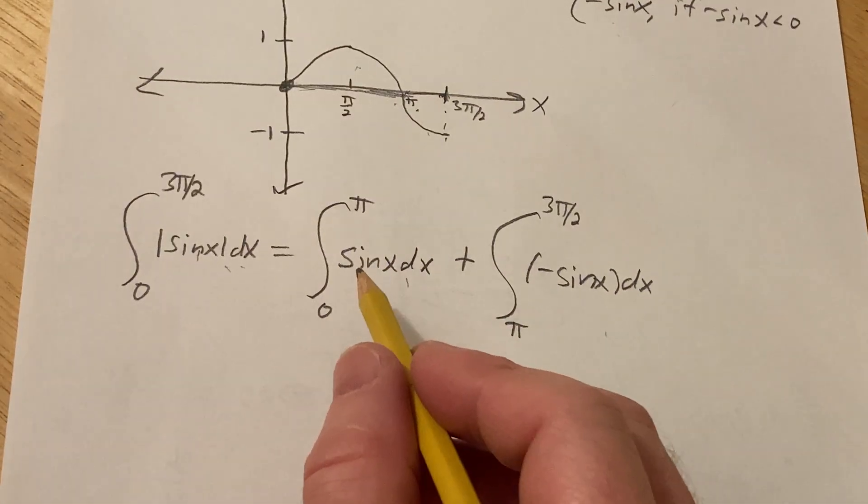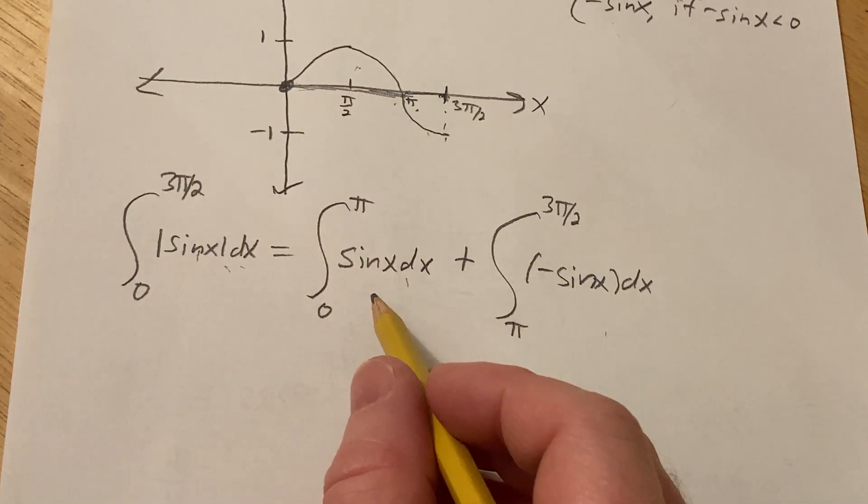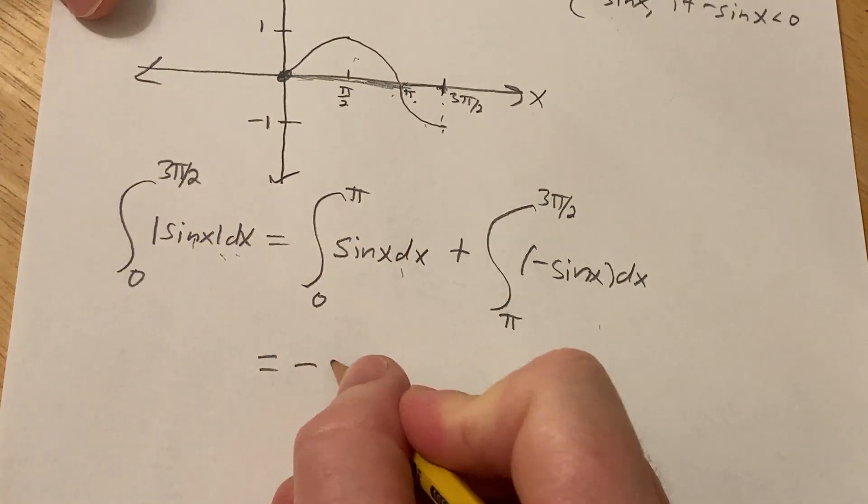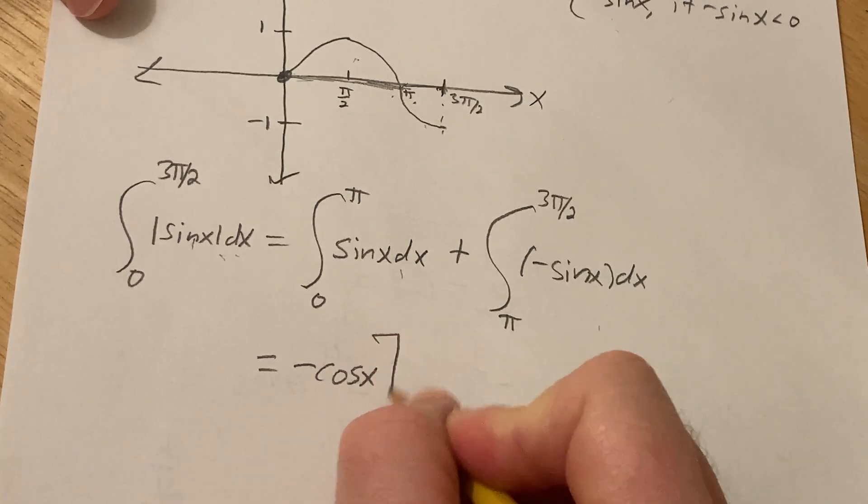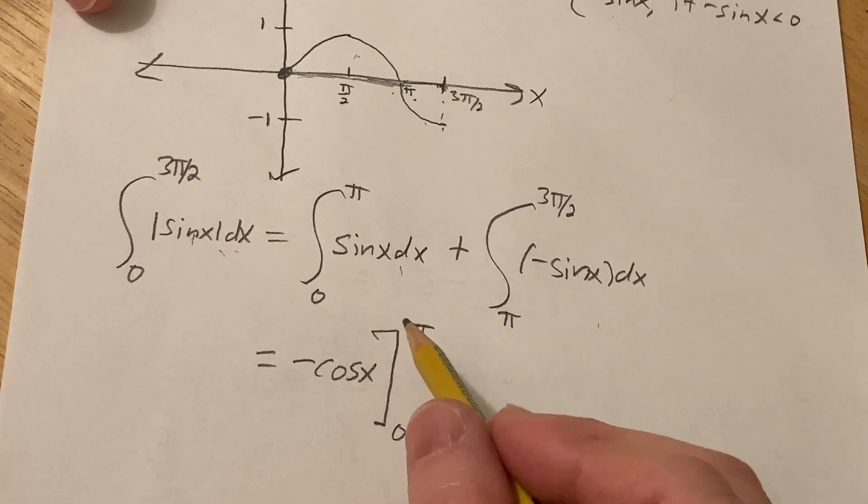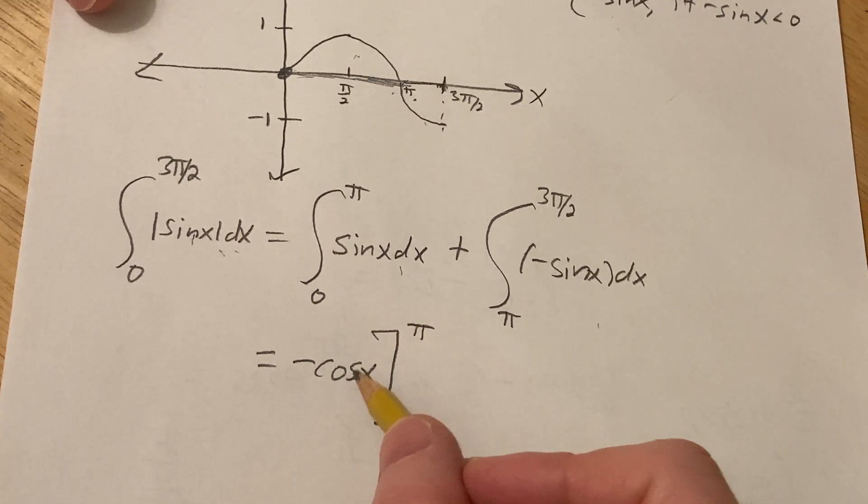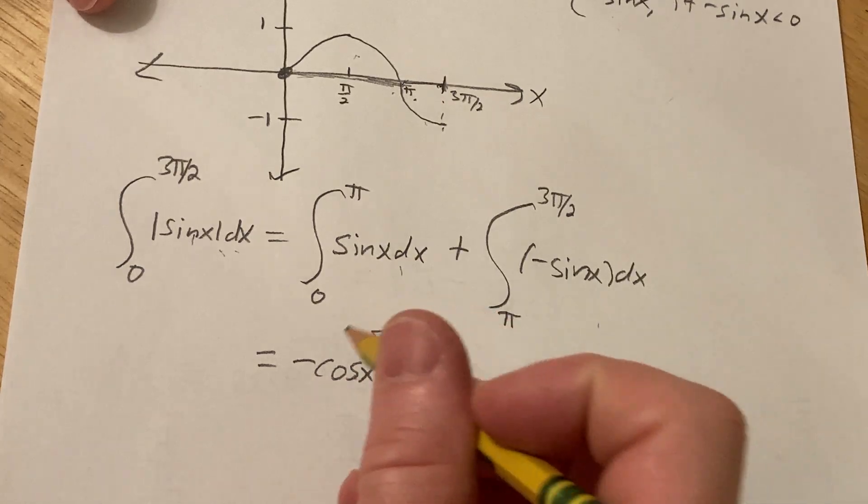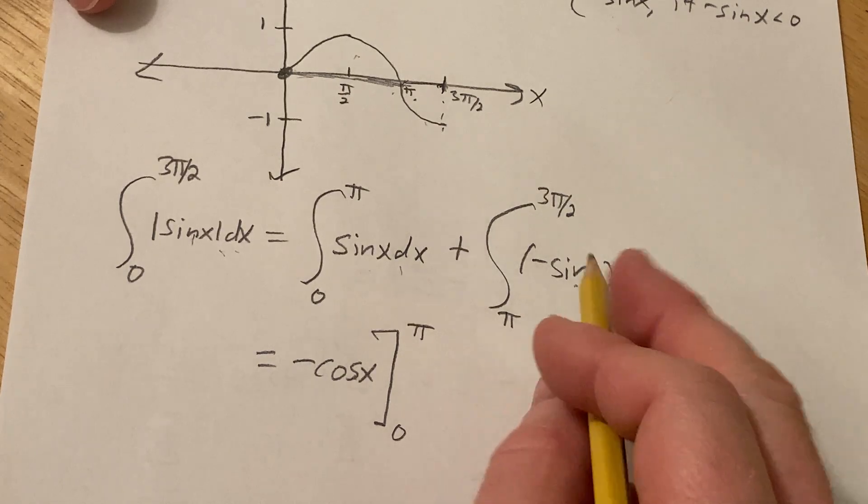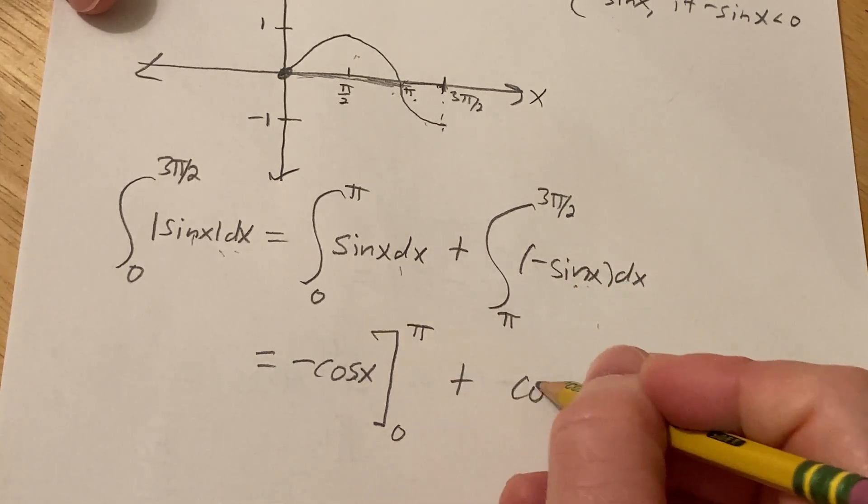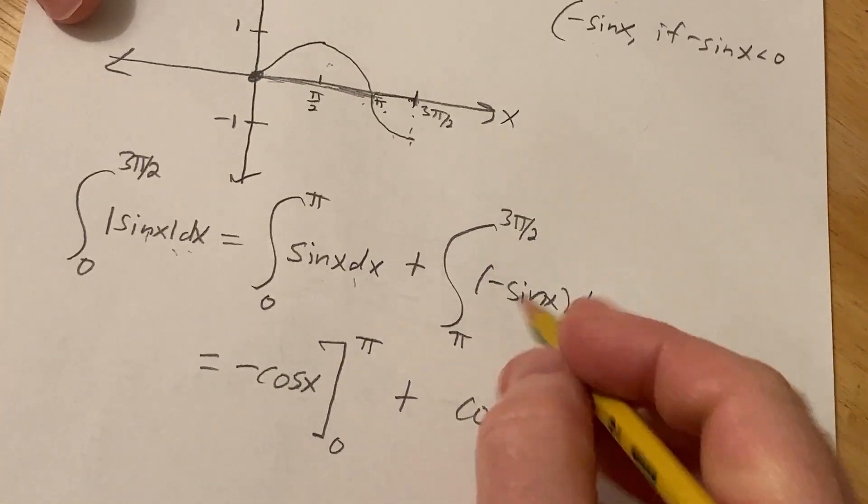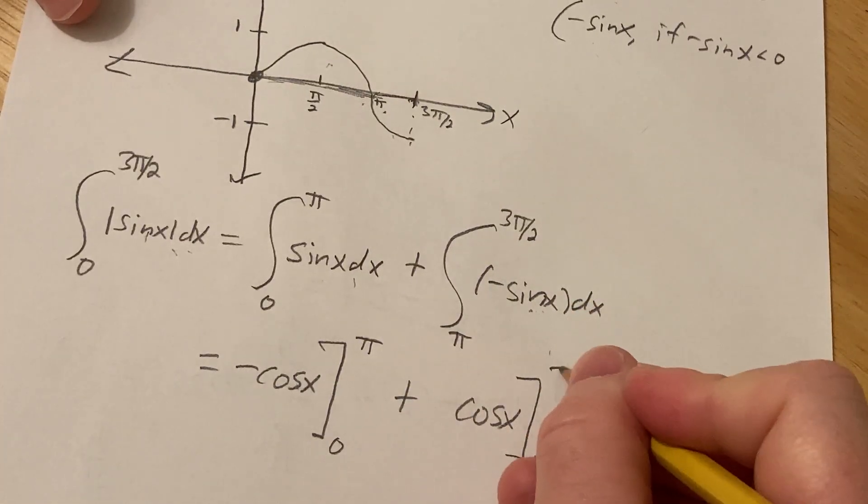When we integrate sine, we want to think backwards. So the derivative of cosine is negative sine. So this is going to be a negative cosine x. And we're going from 0 to pi. And you can check your answer mentally. If you take the derivative of cosine, you get negative sine. But there's already a negative here. So it's like a double negative. And so all is good. And then here, this one's just going to be cosine. Because the negative is already present. The derivative of cosine is negative sine. And we're going from pi to 3 pi over 2.